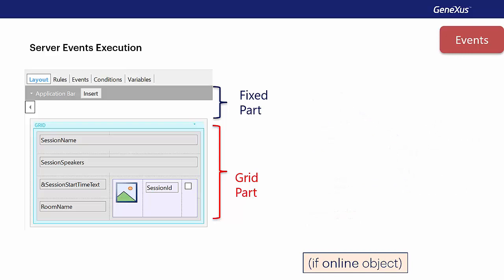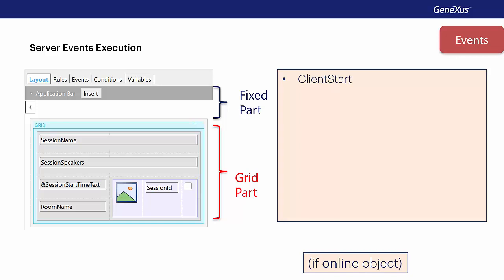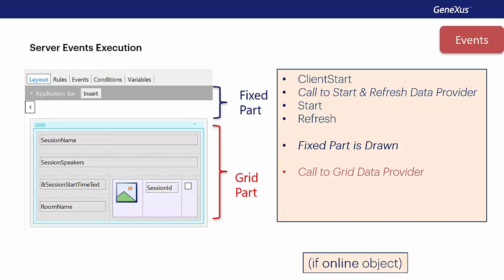From a conceptual perspective, let's see what happens when we execute a panel for smart devices for the first time. The client start event is executed first — only once — and it runs on the device. Then a data provider is executed via a REST call to solve access to the data for the fixed part, recovering all necessary attributes. With the outcome returned by the service, the start event is executed, followed by the refresh event on the server side, and then the fixed part of the layout is drawn. Then a second data provider, also called as a REST service, is executed to solve the recovery of data required by the grid, followed by the execution of the load event. This event is executed n times when the grid has a base table, once for every record. The screen is drawn at two different instances, and this has some consequences we'll see next.